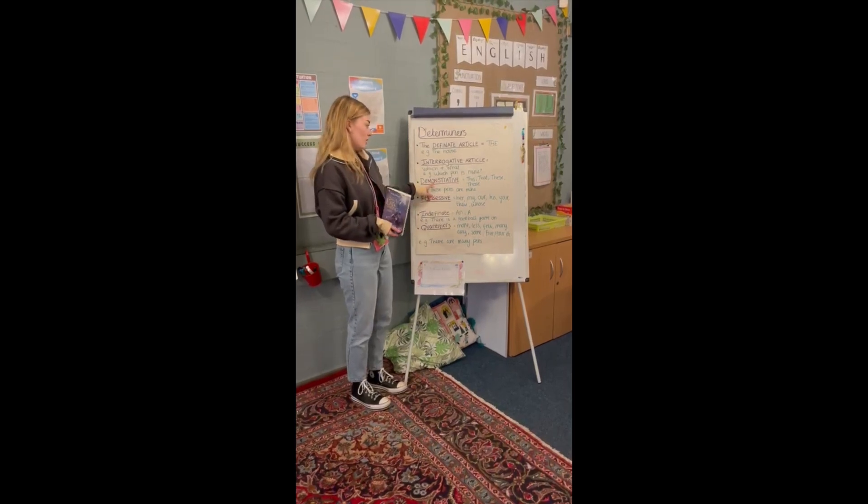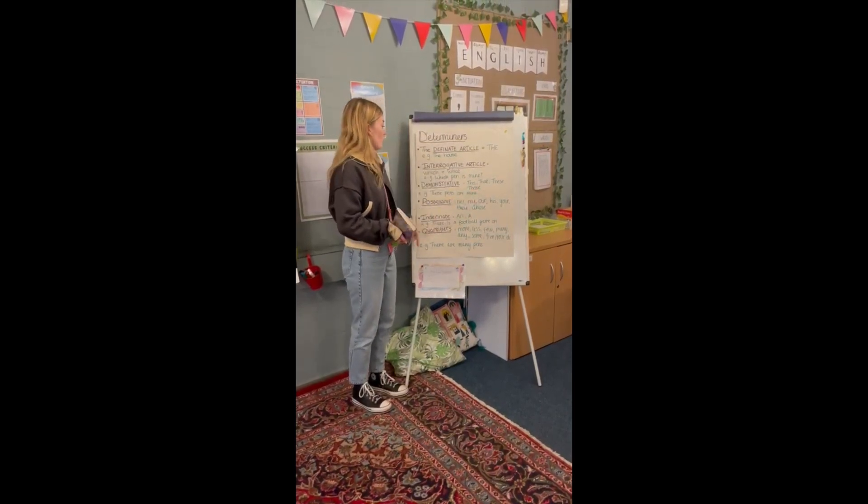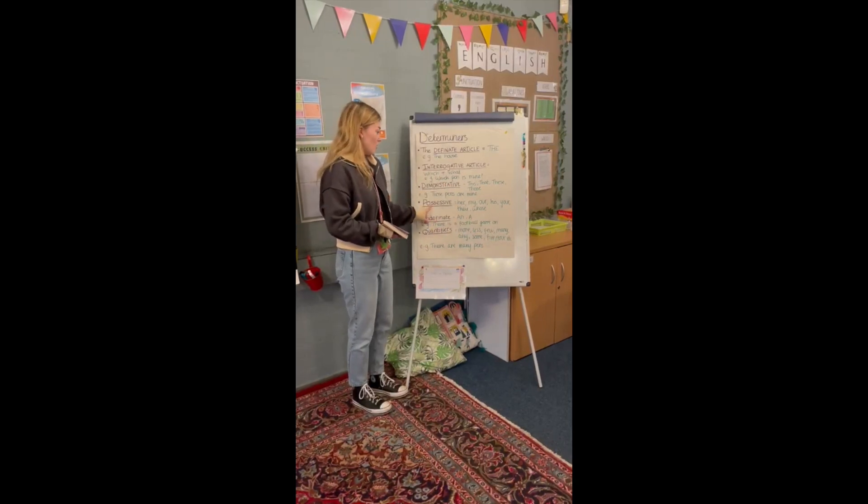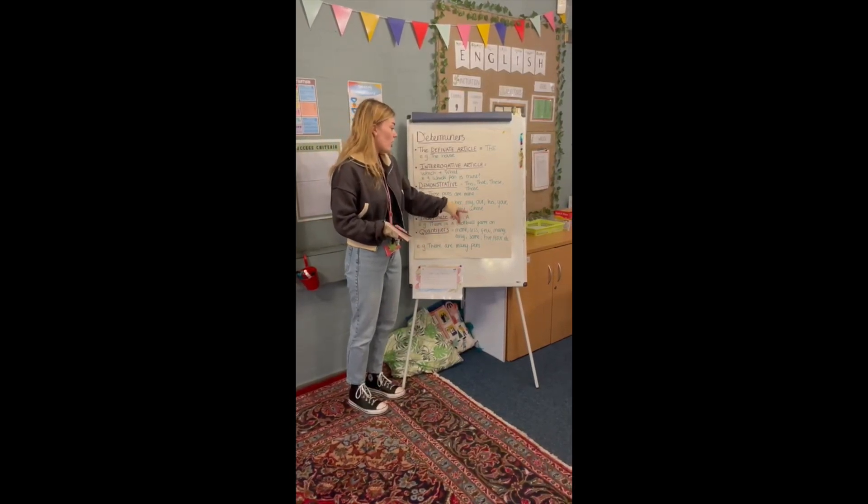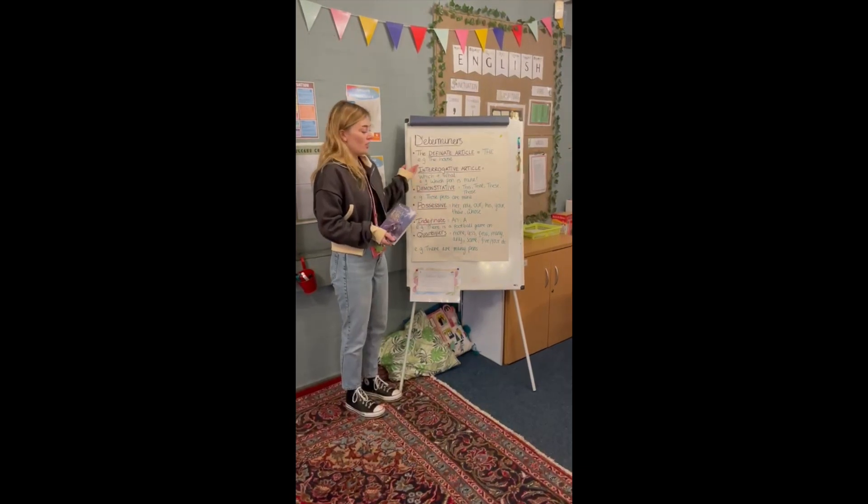We've got demonstrative determiners. We've got this, that, these and those. So those pens are mine. We've got possessive. So it shows her, my, ours, his, yours, theirs.